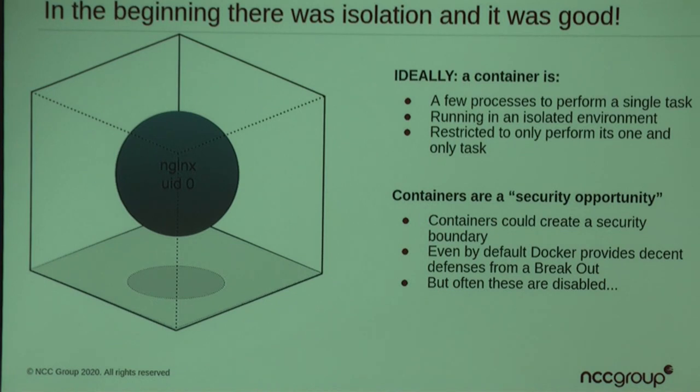Jesse Frizzell did a ton of work building things like Seccomp BPF profiles for Docker, locking down and actually successfully preventing a bunch of CVEs in the Docker service itself. And then what do we do? Sometimes we disable all of that work. My example: would you run a piece of malware in a hypervisor or virtual machine? Some of us might. But I've never seen anyone say they'd run malware in a container because they trust the container security model.